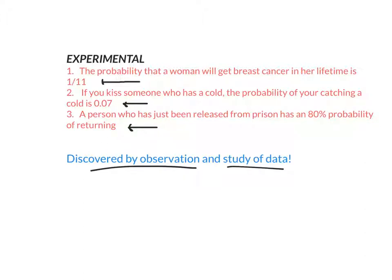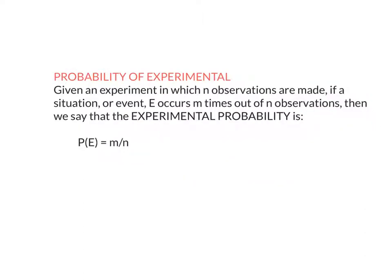It's discovered by observation and study of data, not just doing the math. Probability of experimental, the formula is exactly the same. Given an experiment where you've made that many observations, that goes in the bottom. If it has occurred m times, then that's the probability, m over n.